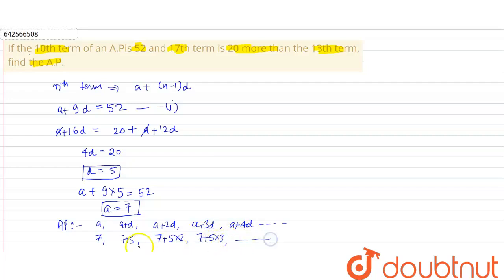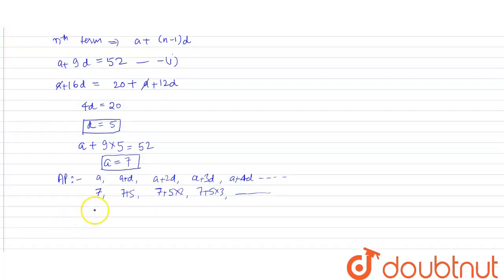So we have 7, 12, 17, 22, 27, and so on. This is our final AP.